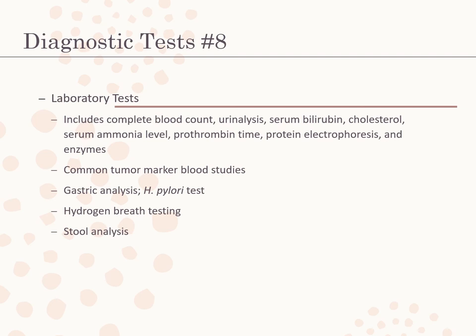Gastroanalysis of gastric fluids assists in determining problems with the secretory activity of the gastric mucosa and evaluates gastric retention in clients with pyloric or duodenal obstruction. The client is NPO for 8 to 12 hours before the test. A small nasogastric tube is inserted and gastric contents are aspirated every 15 minutes for at least an hour and analyzed for acidity or pH, volume, and cytology if indicated.